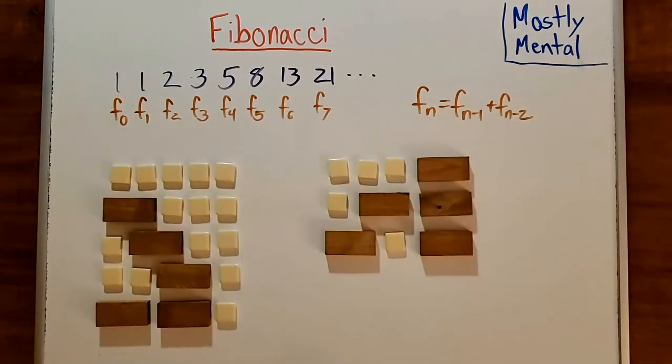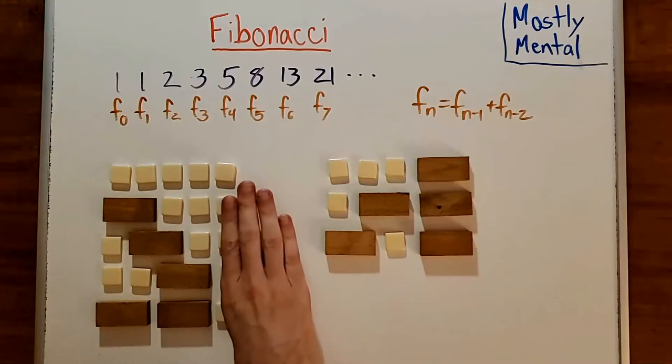Why does this give us the Fibonacci numbers? Well, there are two types of tilings. The ones that end in squares, and the ones that end in dominoes. And how many end in a square? Well, that last square is fixed, but the rest of the row can be tiled in F sub n minus 1 ways.